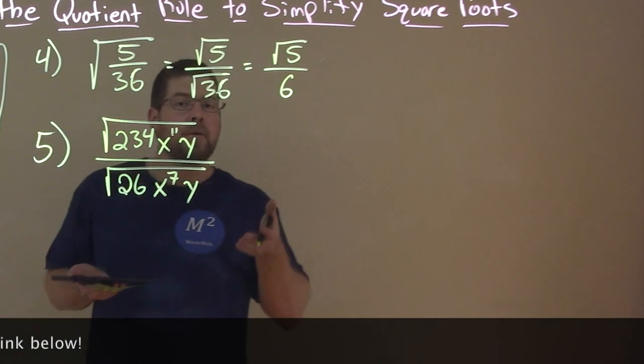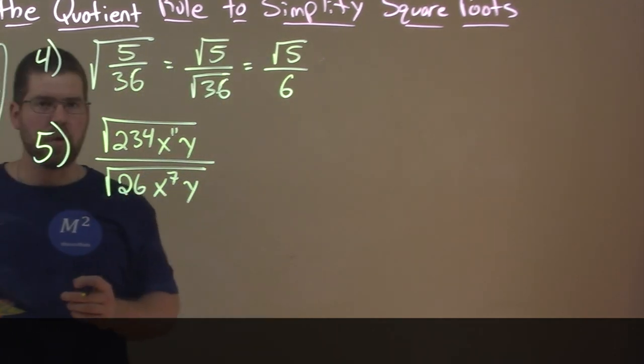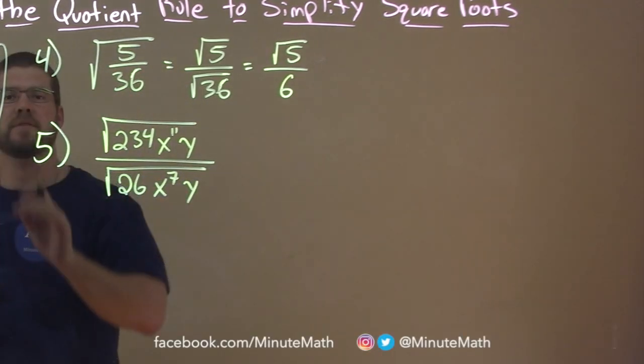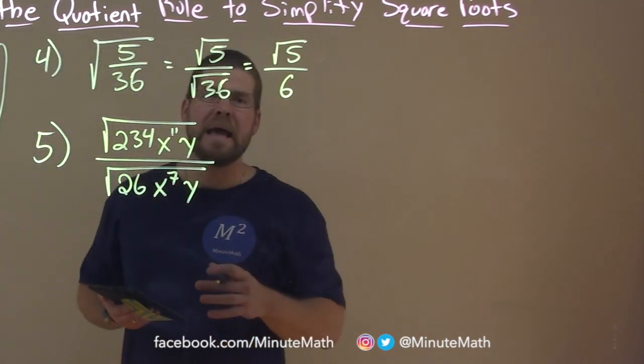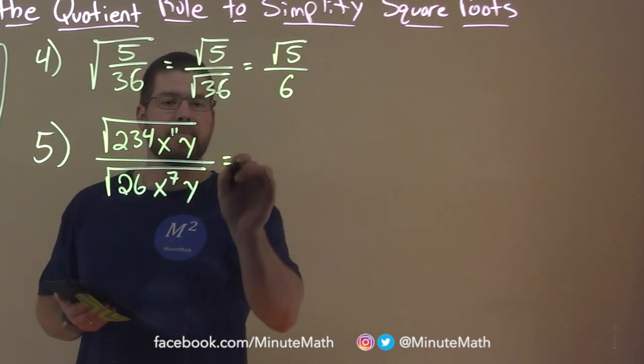Now remember before, when we learned about the product rule, that this rule can go back and forth. Well, same things with the quotient. We already see it broken up here in two different square roots. So we could write this as one big square root. And that's almost preferable sometimes when there's things that we can simplify here.